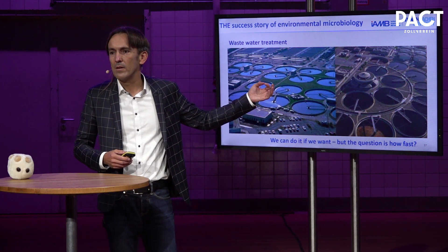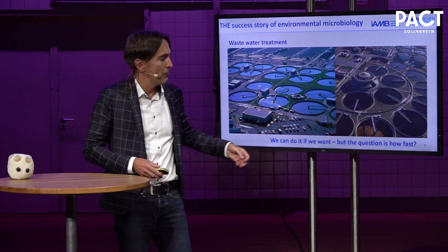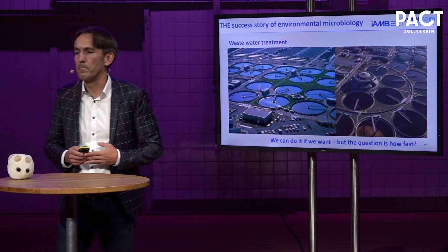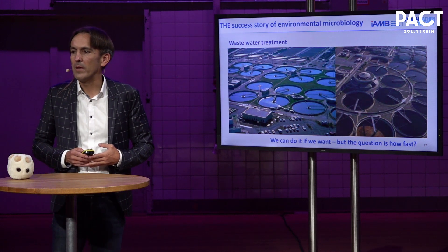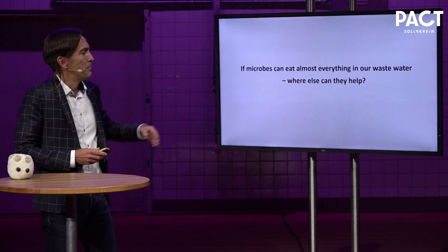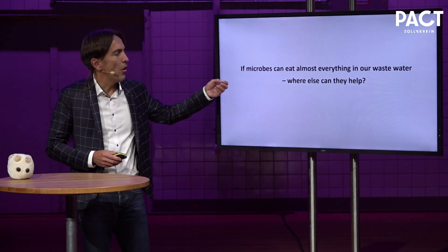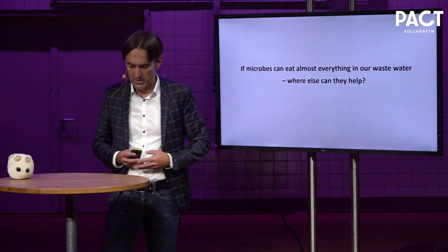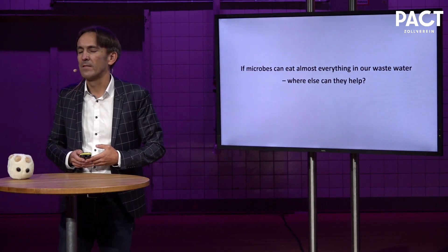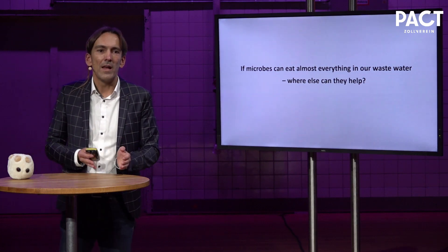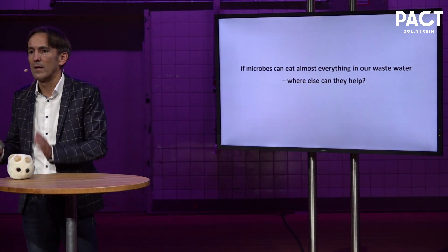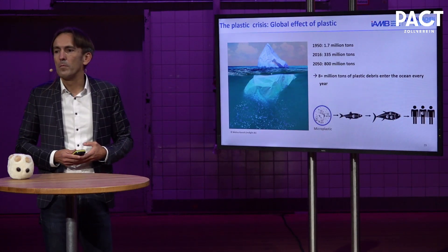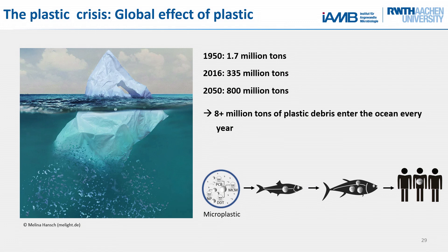We can even re-naturate the Emscher — and the Emscher is really a tough case. The question is how fast we can do that. If microbes can eat almost everything in our wastewater, where else can they help us? I would like to tackle another challenge related to our carbon and fossil resource use: the plastic challenge. We really face a plastic crisis — we lose too much plastic to the environment, estimated at 8 million tons, with scenarios suggesting this could increase to 40 million.